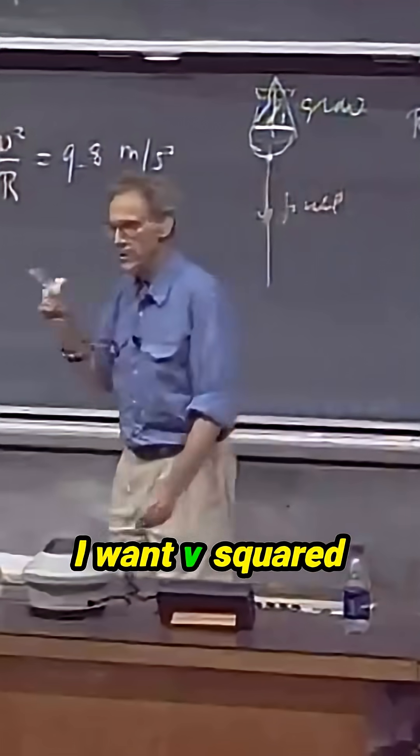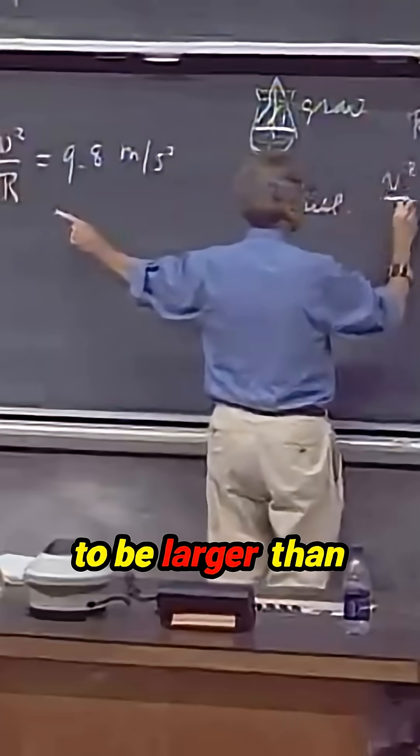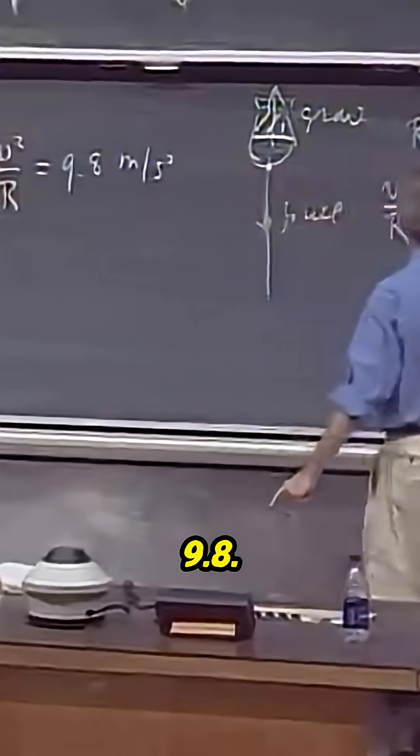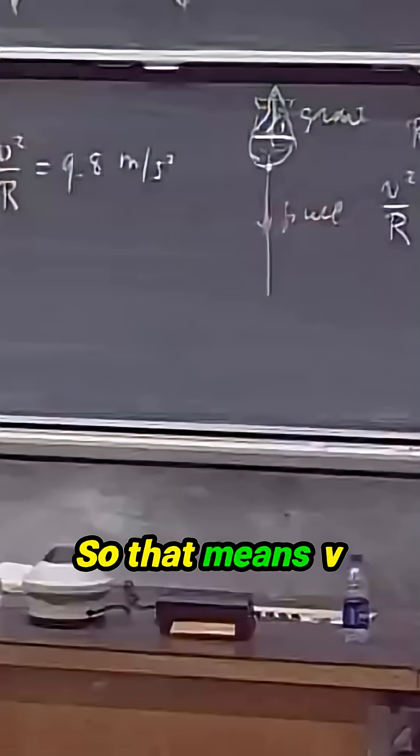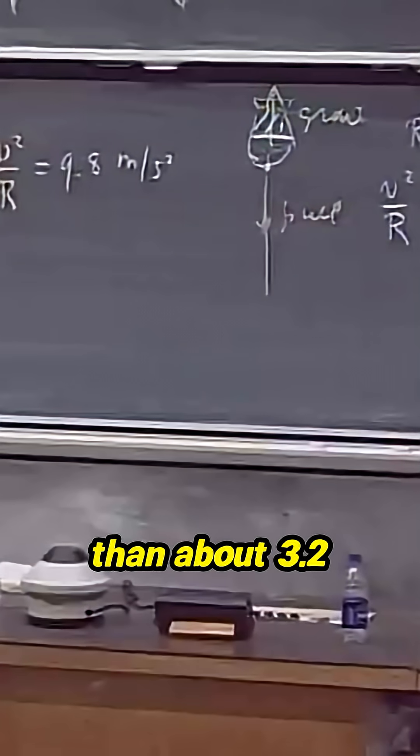And I want v squared over r, I want that to be larger than 9.8. Let's just call it ten. So that means v has to be larger than about 3.2 meters per second.